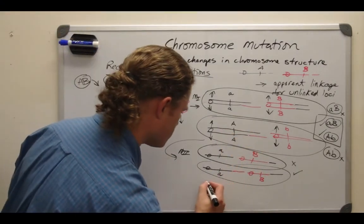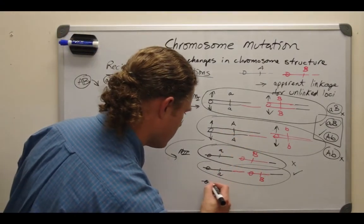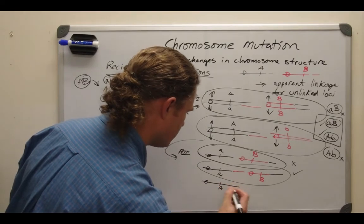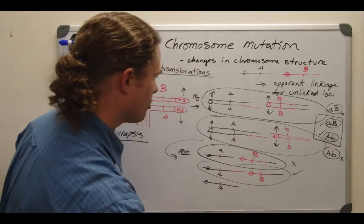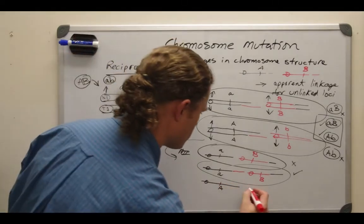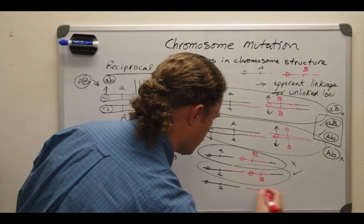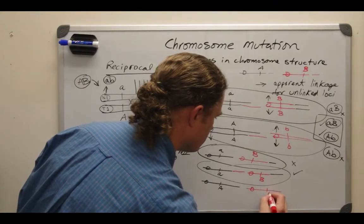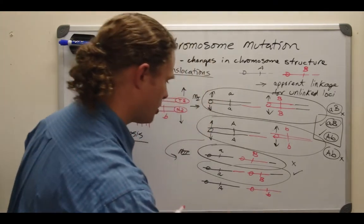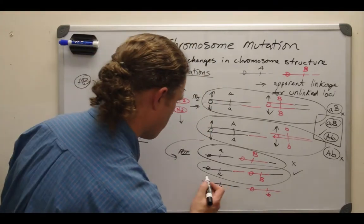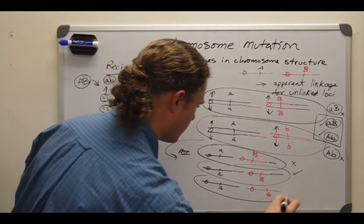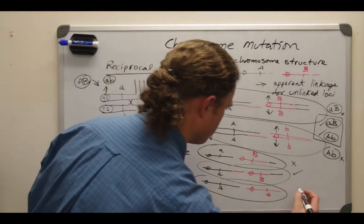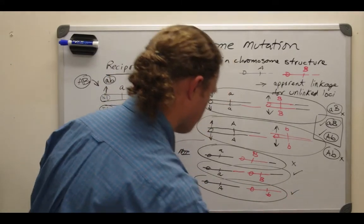The next cell has a big A on a normal chromosome structure and a little b on a normal structure. That one is going to be functional as well — no problem there.